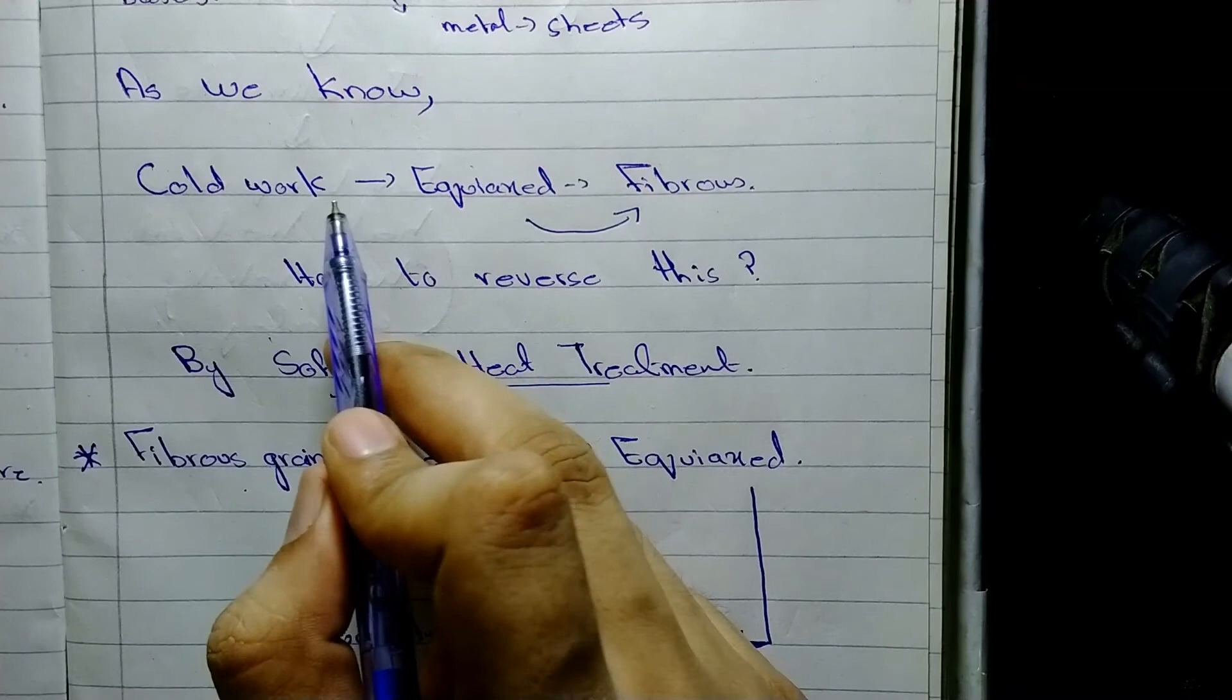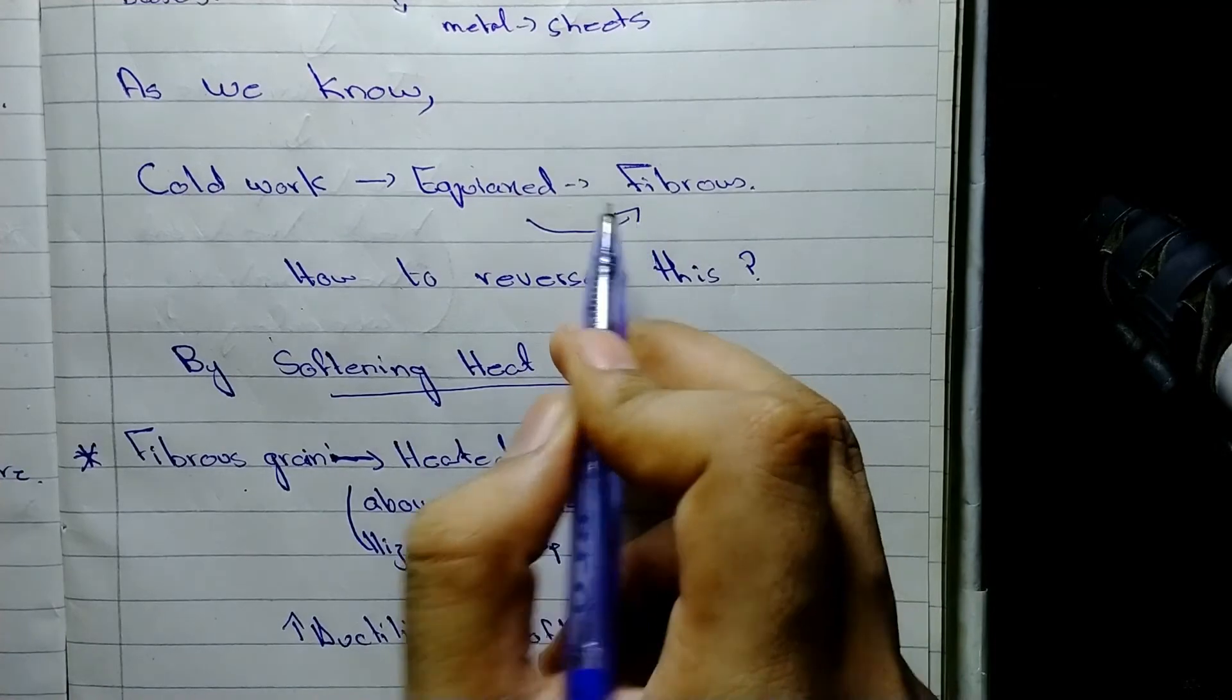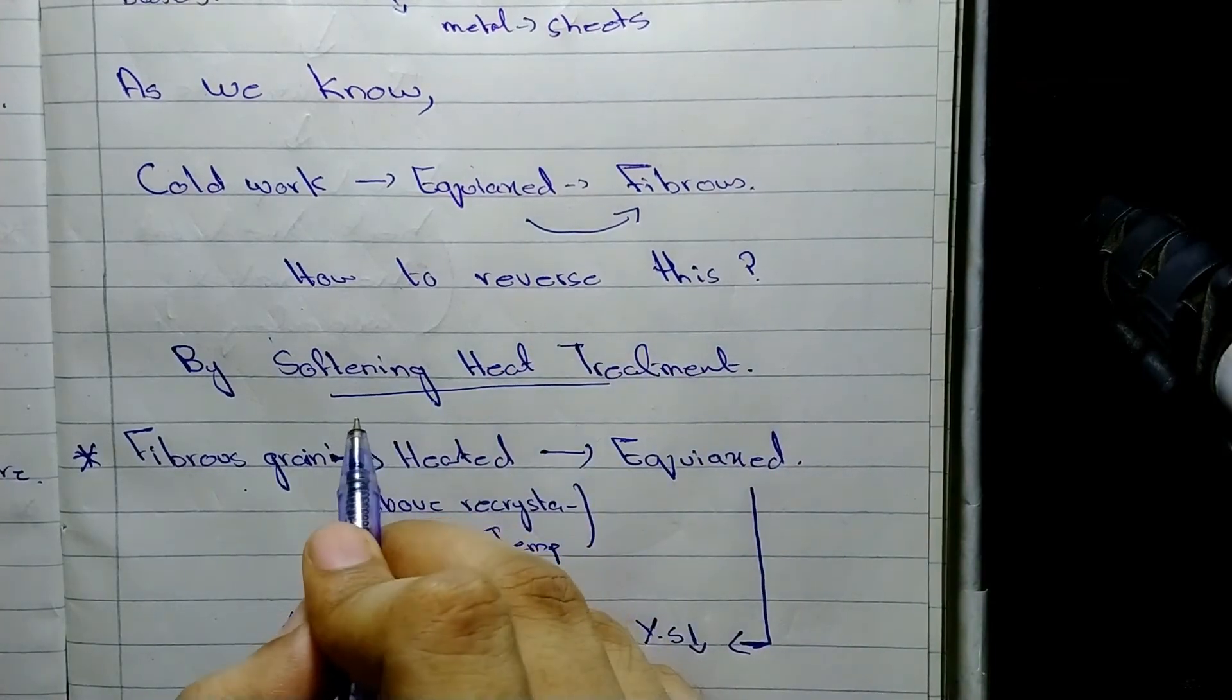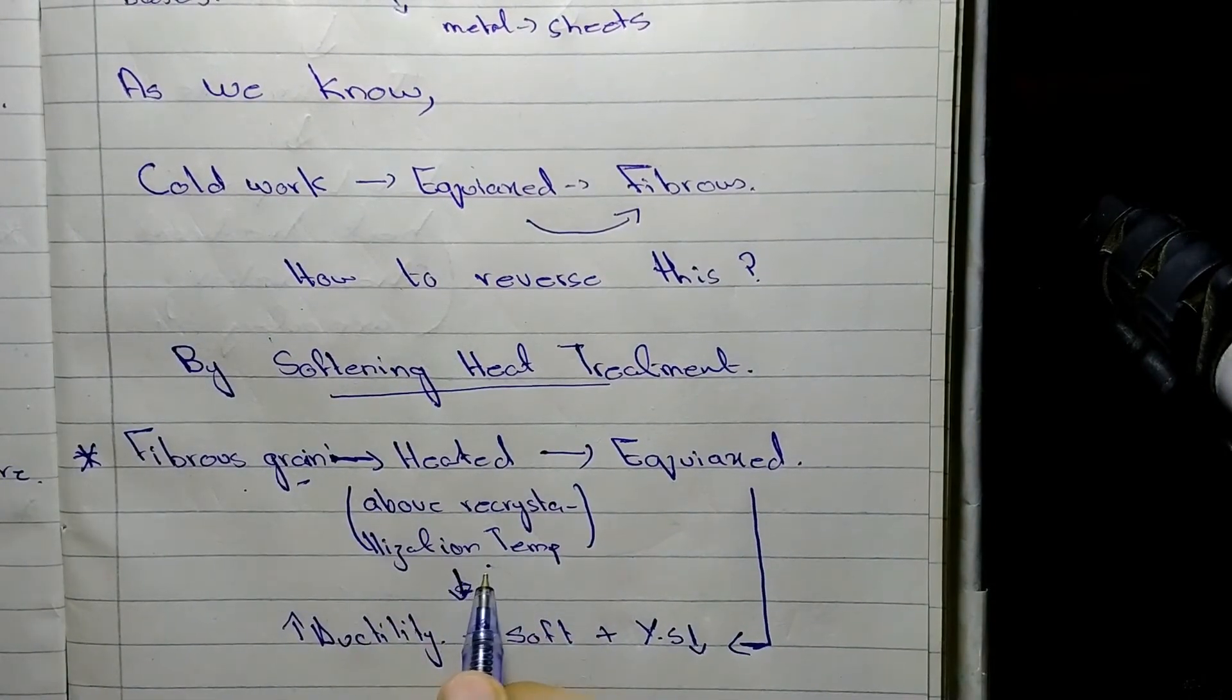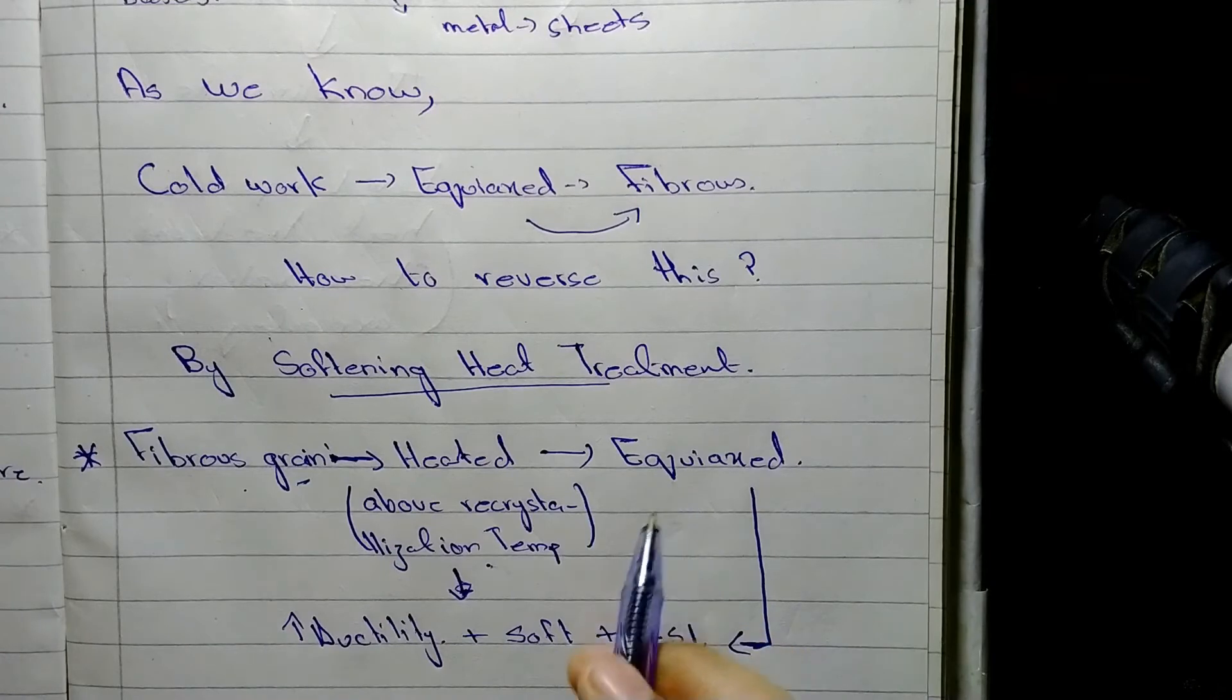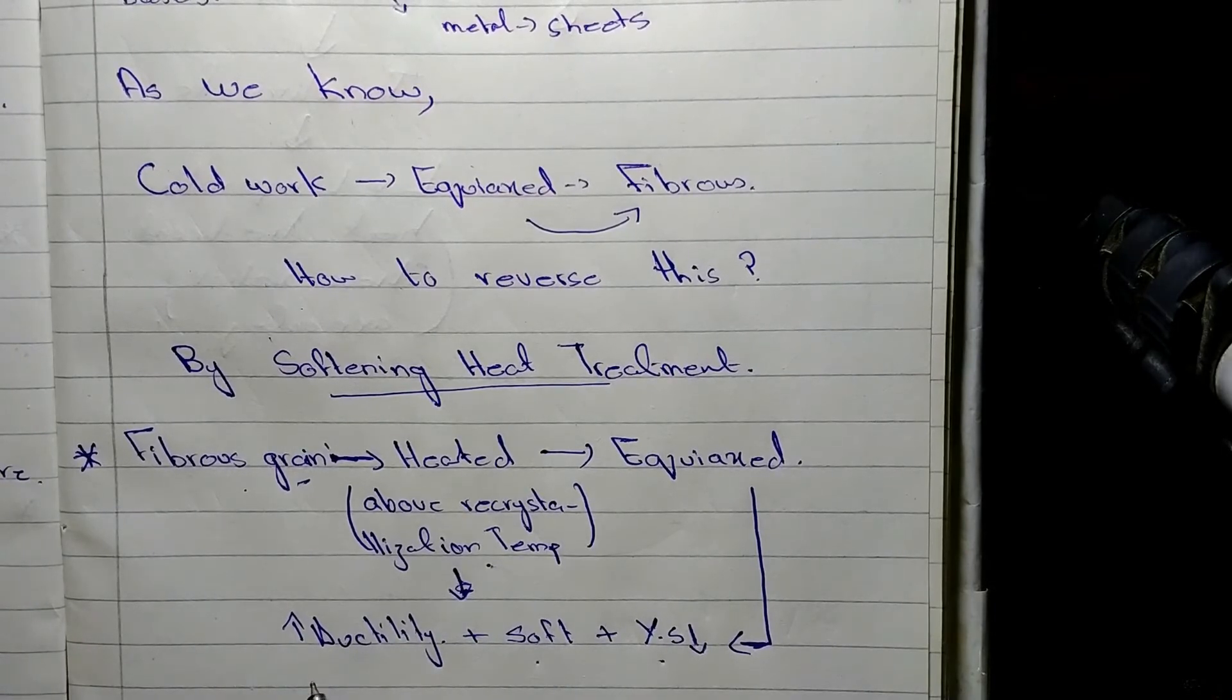Now as we know cold work metal changes its equiaxed grain shape to fibrous form. Basically this process can be reversed, but how? The answer is softening heat treatment. What happens in softening heat treatment is we heat the fibrous grain structure above the recrystallization temperature, then it reverts back to its original form, that is equiaxed structure. But now this metal will have a lower value of yield stress and it will be soft and it will have higher values of ductility because the metal has increased its potential to be cold worked.